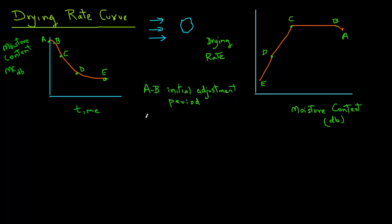This adjustment period is usually quite small and often ignored. But then from B to C, we drew a horizontal line. That means the drying rate remains constant. As you can see, the drying rate at both points B and C are the same. This period is called the constant rate drying period.